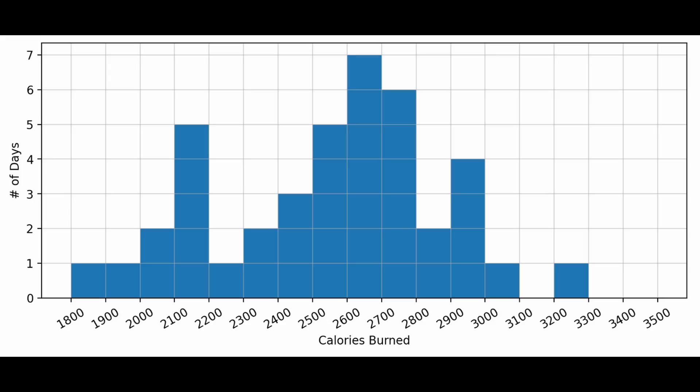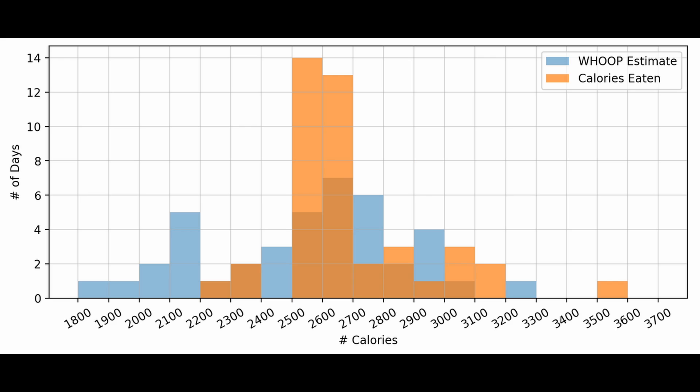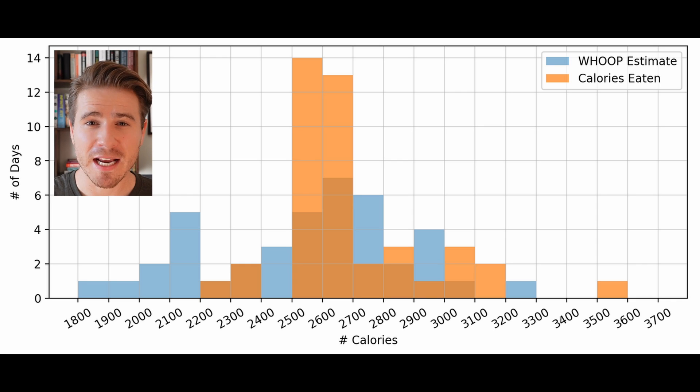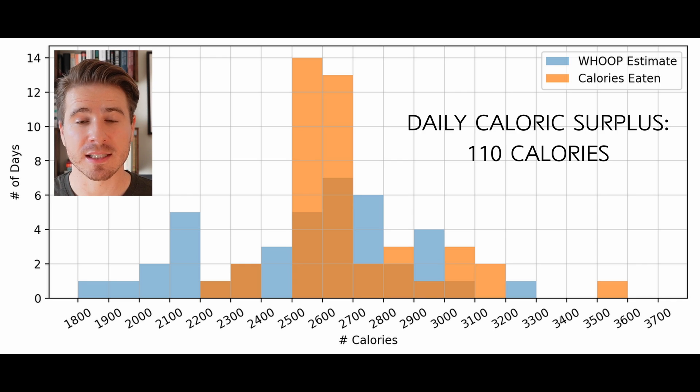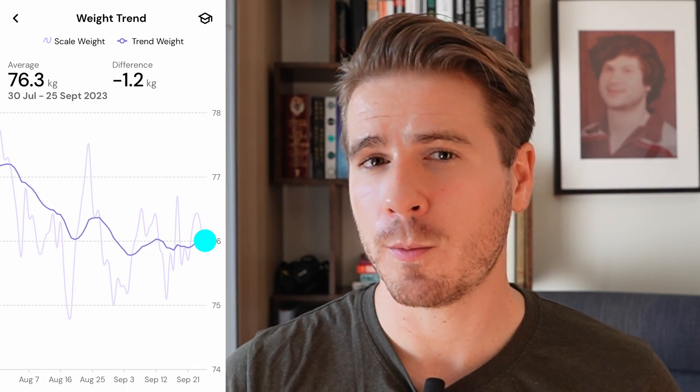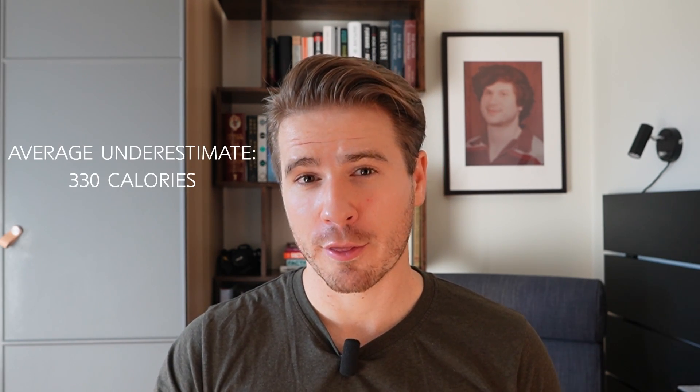I felt like WHOOP's calorie expenditure estimates were way too low, so I compared it to my data. WHOOP showed my daily calorie expenditure distribution between August and September 2023. I also logged all the calories I consumed during that period. Superimposing the two distributions, I tend to consume more calories than WHOOP says I burned — an average daily calorie surplus of 110 calories. Over 45 days, you'd expect I would have gained about 0.6 kilograms. But in fact, my weight trend went down 1.2 kilograms, implying I was in an average caloric deficit of 220 calories per day. That means WHOOP is underestimating my calorie burn by 330 calories every single day. That's pretty bad.